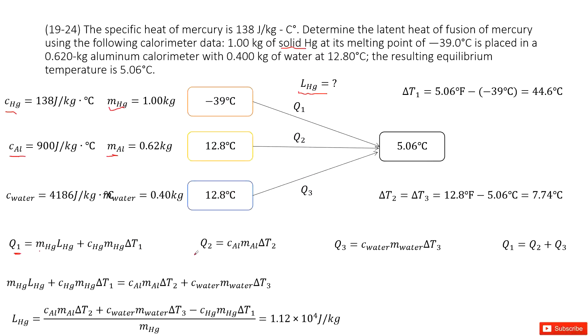And similarly, we can find Q₂ as c_m ΔT₂, and then Q₃ as c_m ΔT₃. And Q₂ is for aluminum, Q₃ is for water. Finally, we can write the energy is conserved: Q₁ equals Q₂ plus Q₃.